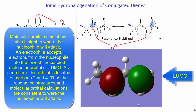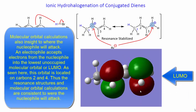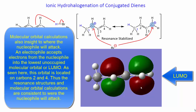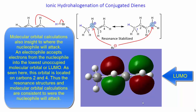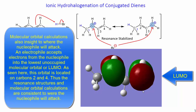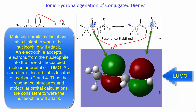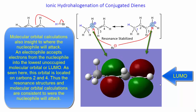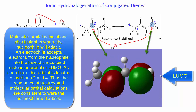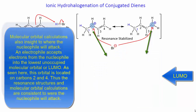Molecular orbital calculations also provide insight into where the nucleophile will attack. An electrophile accepts electrons from the nucleophile into the lowest unoccupied molecular orbital, or LUMO. As seen here, this orbital is located on carbons 2 and 4. Thus, the resonance structures and molecular orbital calculations are consistent with where the nucleophile will attack.